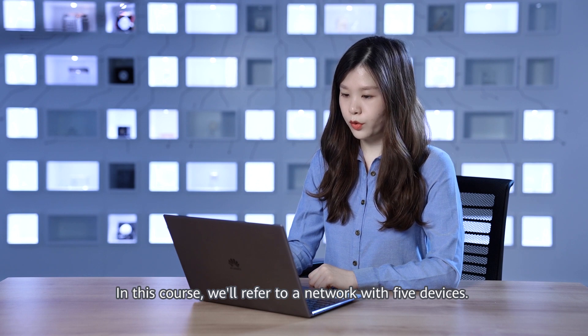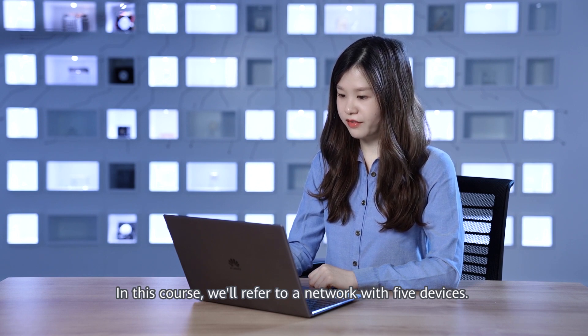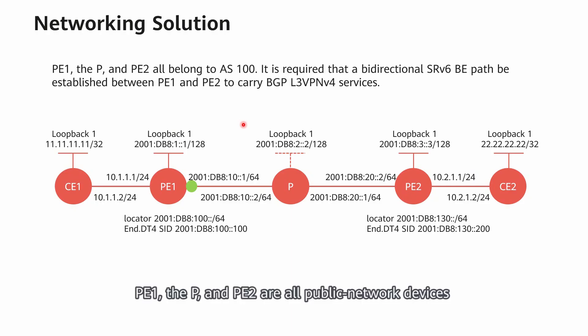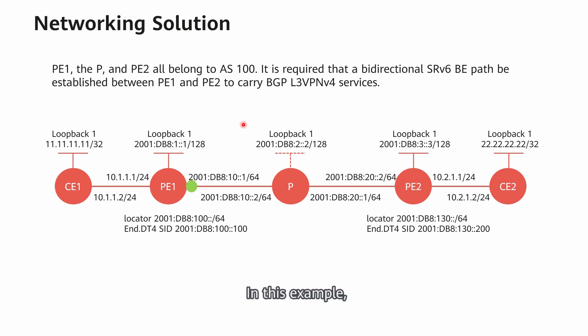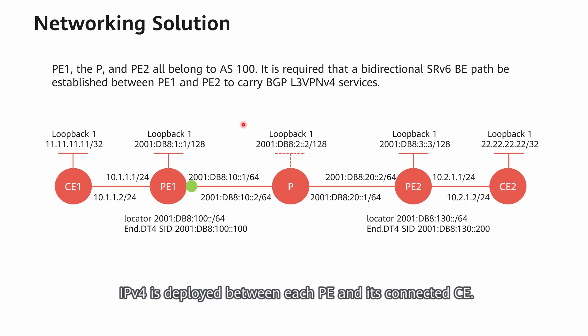In this course, we refer to a network with five devices. PE1, the P, and PE2 are all public network devices that belong to AS100. A bidirectional SRV6 BE path needs to be established between PE1 and PE2 to carry BGP L3 VPN V4 services. IPv4 is deployed between each PE and its connected CE.